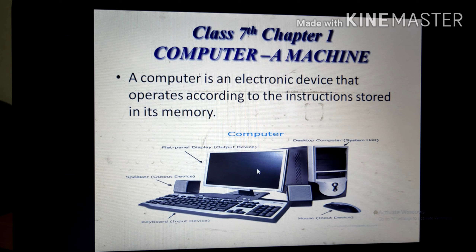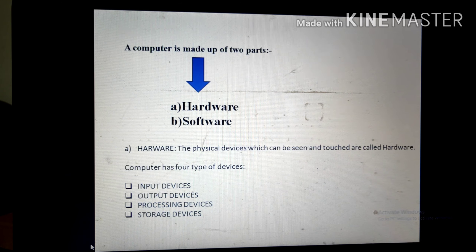Here is an image of a computer — it shows a monitor, CPU, speaker, keyboard, and a mouse. Now, a computer is made up of two parts: hardware and software.